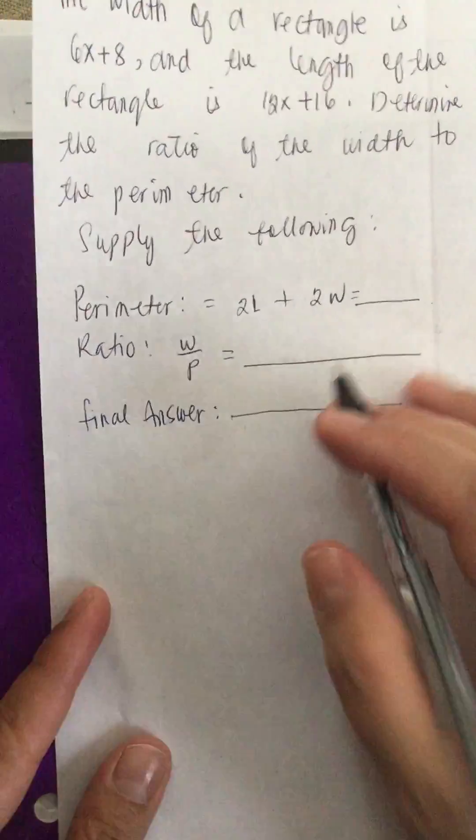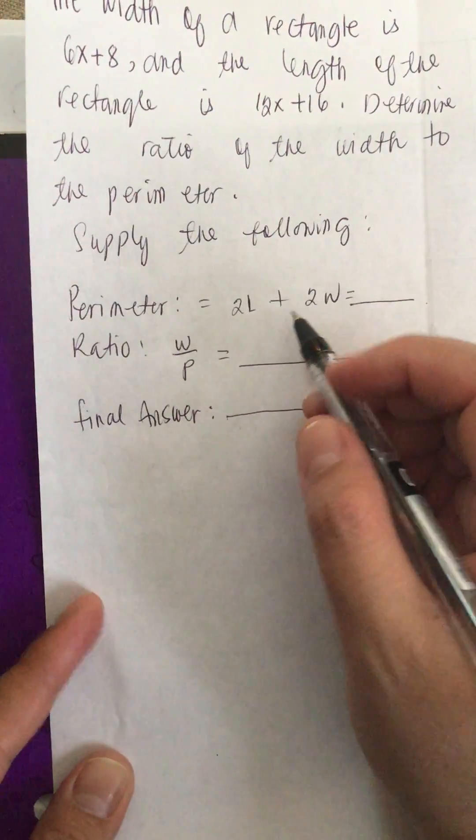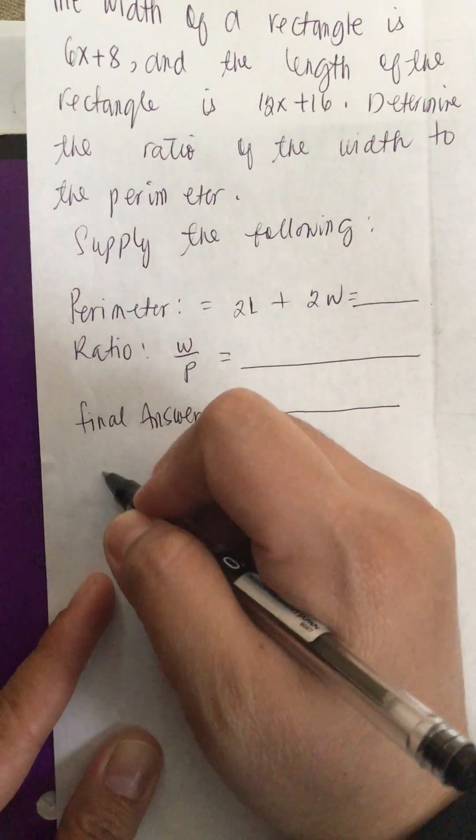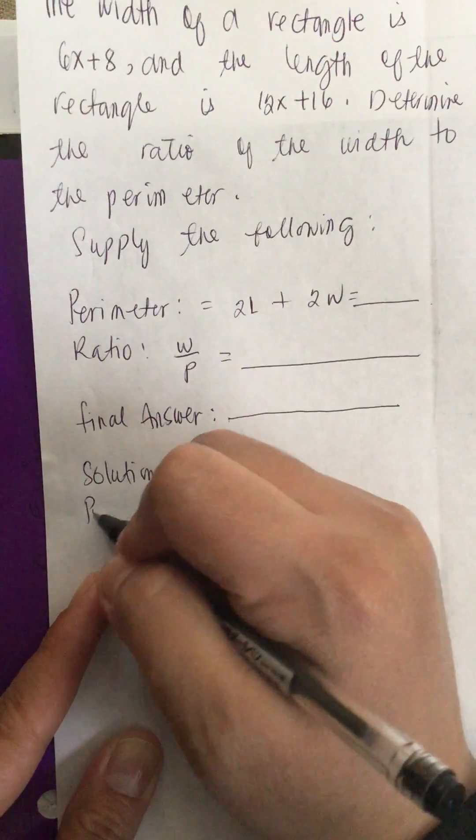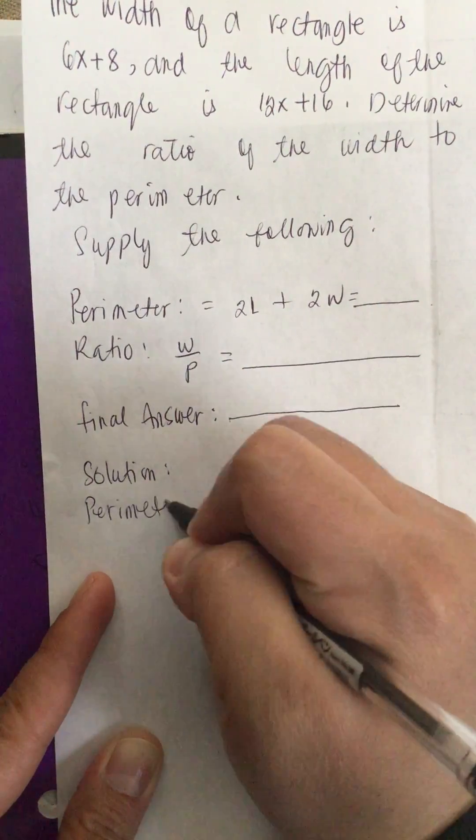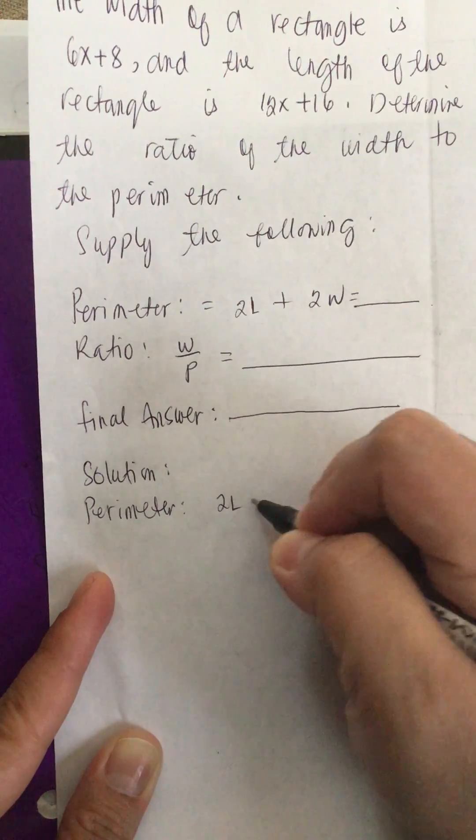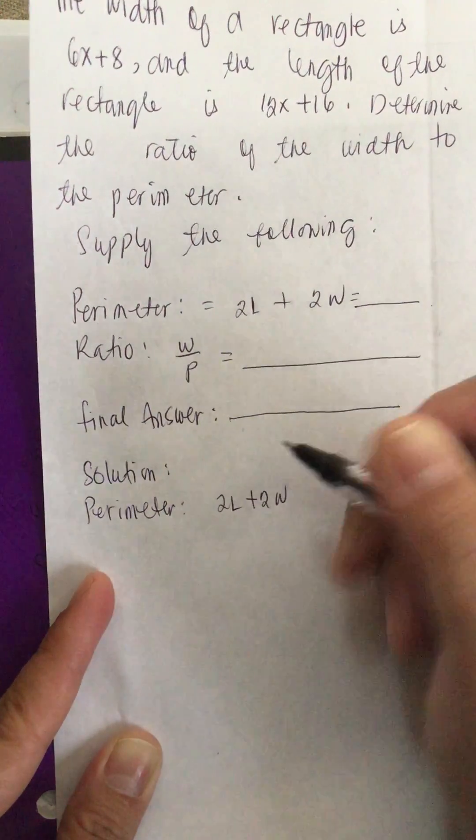Let's find the perimeter. It's 2L plus 2W. Solution: Perimeter equals 2L plus 2W.